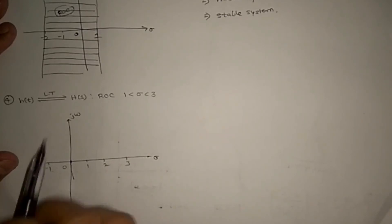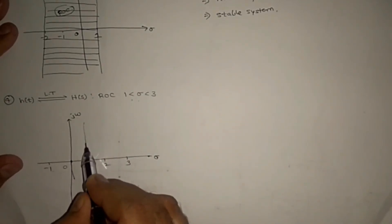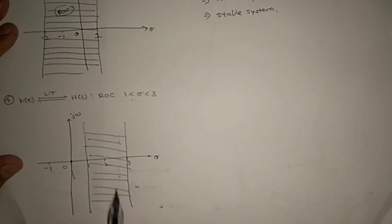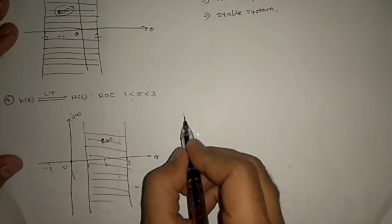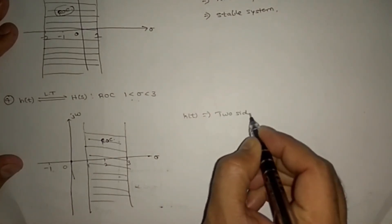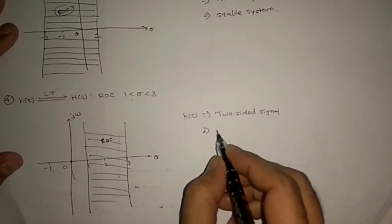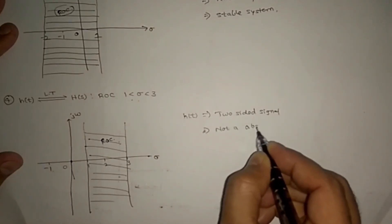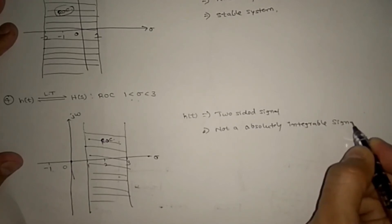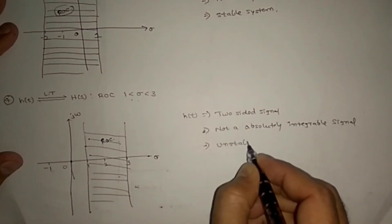Example 4: H(t) has Laplace transform H(s) with ROC 1 < σ < 3. This is a strip from 1 to 3 in the s-plane. Since it is a strip, H(t) is a two-sided signal. However, the ROC does not include the jω axis, so the signal is not absolutely integrable and the system is unstable.